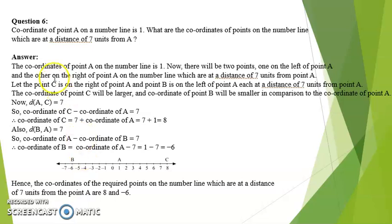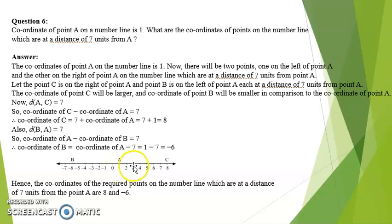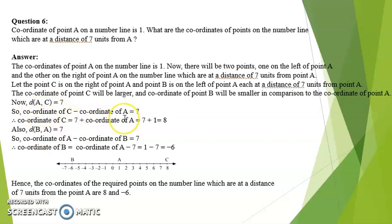Question number 6 is just like question number 4 which we solved just now. Coordinate of point A on the number line is 1. What are the coordinates of points on the number line which are at a distance of 7 units from A? I want 7 units from A on both sides — right hand side named C and left hand side named B. Distance AC is 7, so coordinate of C minus coordinate of A equals 7, giving coordinate of C as 7 plus 1, which equals 8.